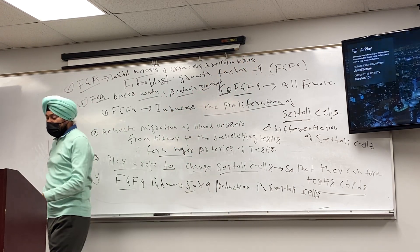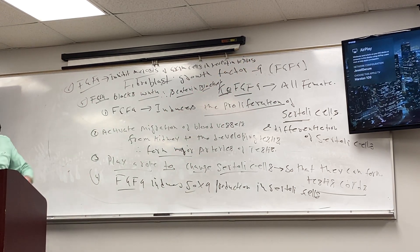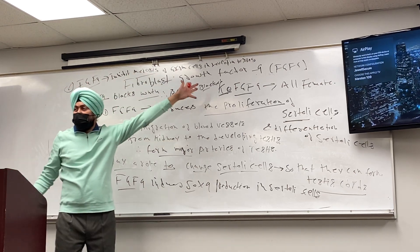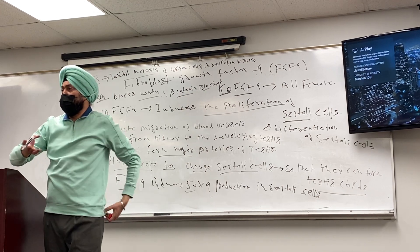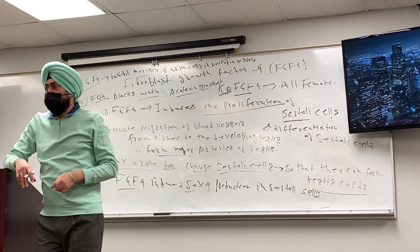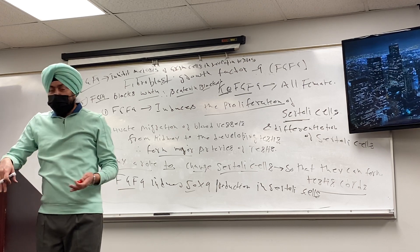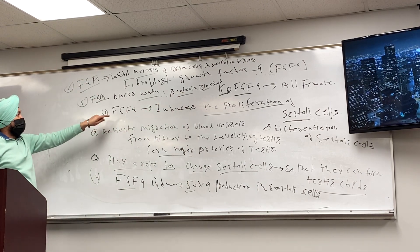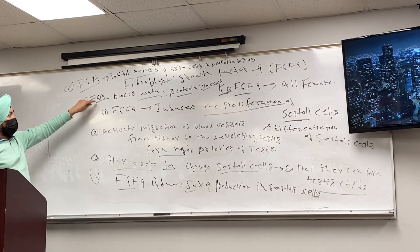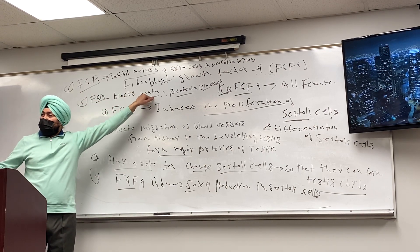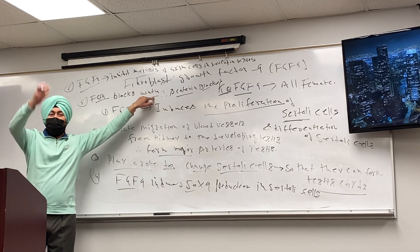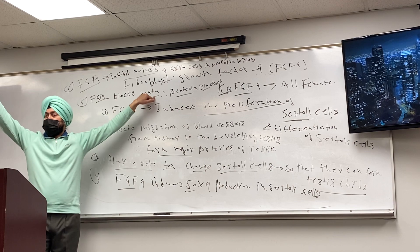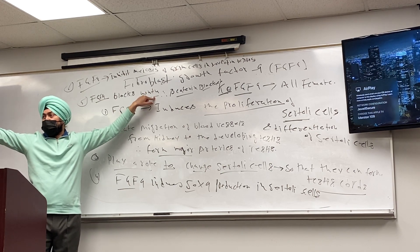So FGF9, which is produced by SOX9, is critical for the development of males. If you knock down FGF9, you will have all female. The reason is clear — FGF9 is blocking Wnt4, so if FGF9 is not there, Wnt4 will be active, R-spondin 1 will be there, you will have beta-catenin activation, and all female.